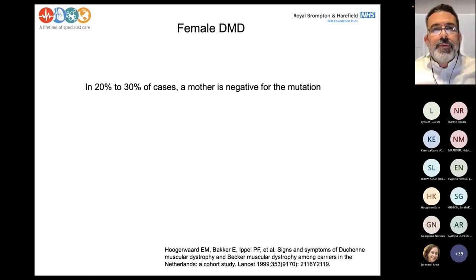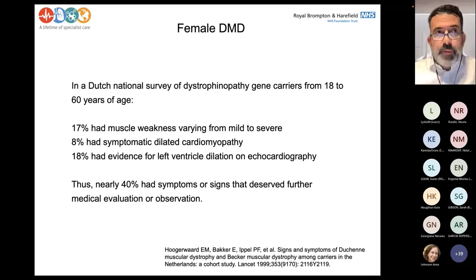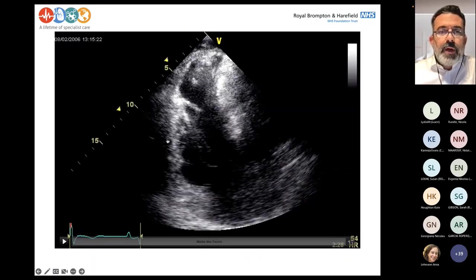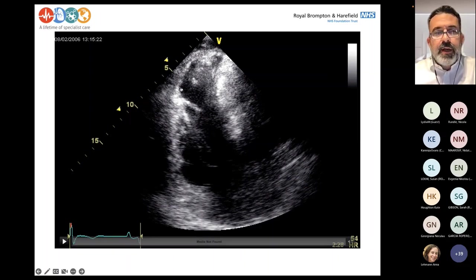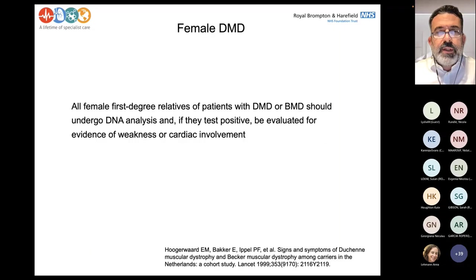Duchenne female carriers sometimes manifest, and when they do, we have to pick up the diagnosis early because they may have complications — they may go into dilated cardiomyopathy and heart failure. This is an echocardiogram of a female Duchenne patient. You can see that the right ventricle is dilated with thin and aneurysmal areas. The only diagnosis in this patient was that she was a Duchenne female carrier, and this is what caused these right ventricular changes.